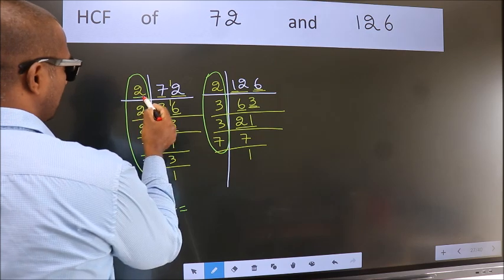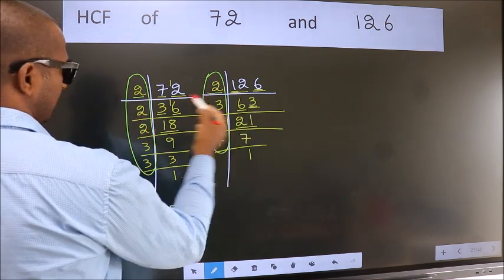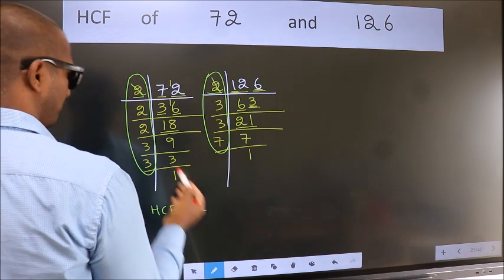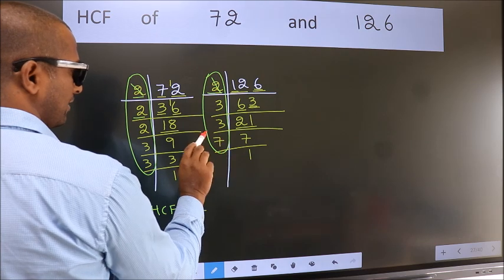Starting with the number 2. Do we have 2 here? Yes. So, cut 2 right here. Next number 2. Do we have 2 here? No.